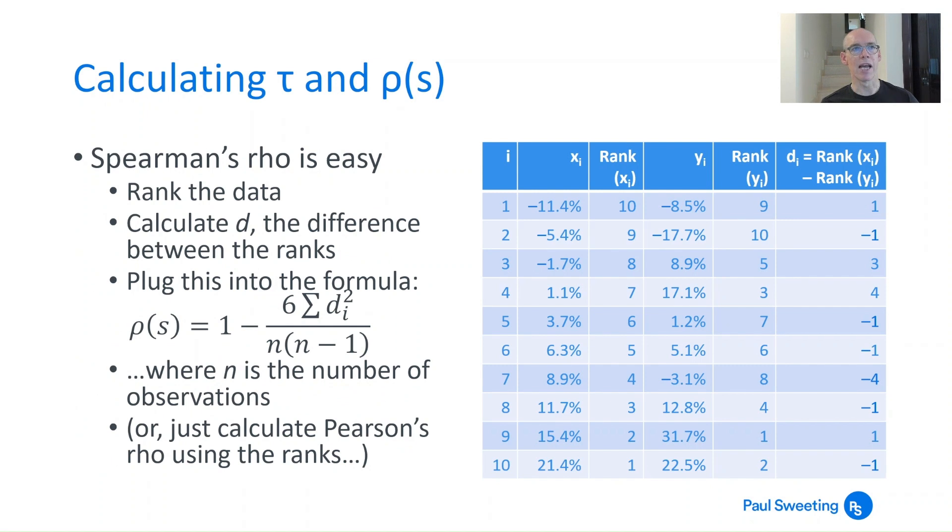Calculating tau and Spearman's rho: you can just use Pearson's rho on the ranks and that will give the answer. There's also a formula for Spearman's rho, and it is actually pretty easy. What we've got here is a couple of data sets, XI and YI, and we've got them there in the second and the fourth columns. The third and the fifth columns gives the ranks of those observations. The next column then just looks at the difference between those ranks.